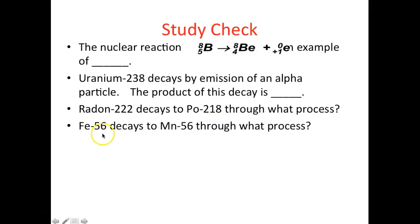Iron-56 decays to manganese-56. Manganese is one place to the right of iron, so this would be a beta decay.